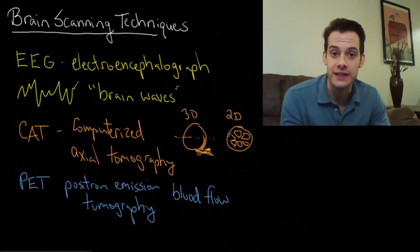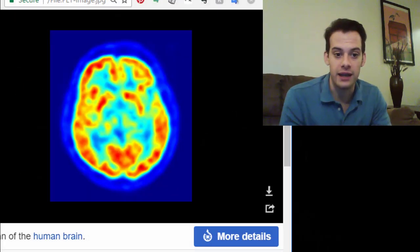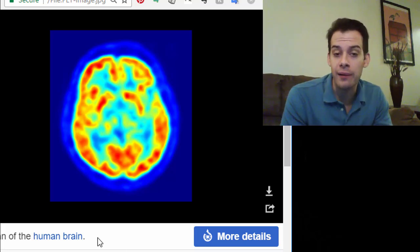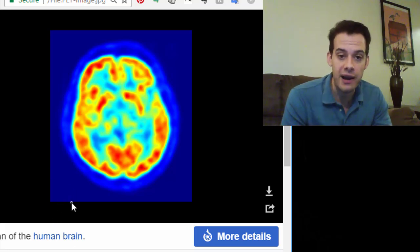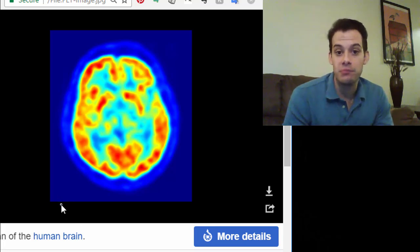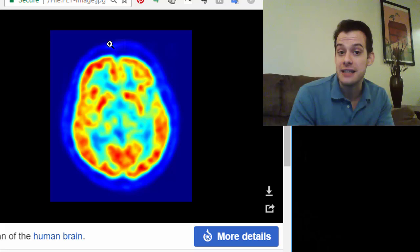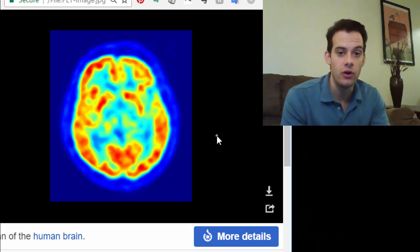So then we sort of color code this information and we put it into this graph and we see something like this. So this is a PET scan and the blue areas are less active and the yellow and orange areas are more active. They have more blood flow. So that means those areas of the brain are using more energy therefore they're probably more active. But as you can see from this picture it's not a very specific measure of brain activity. We get a general idea of regions that are more or less active.